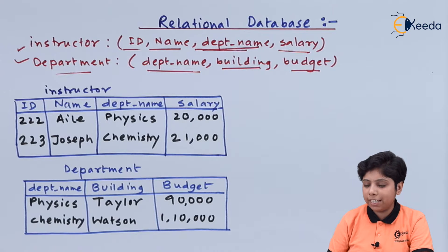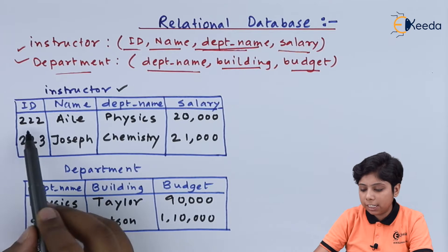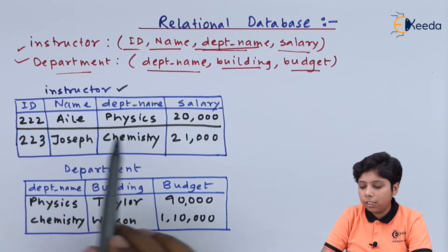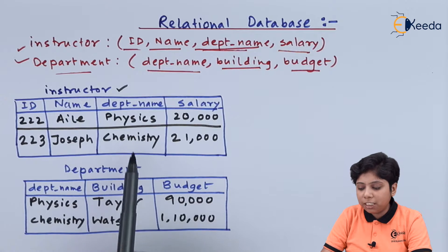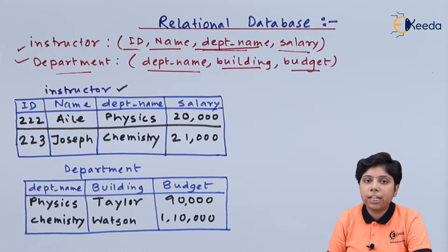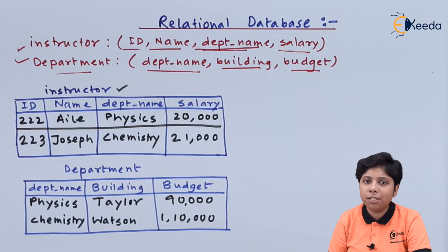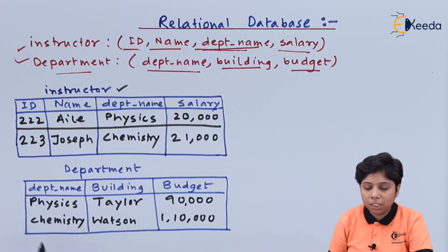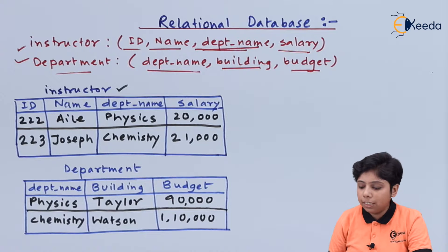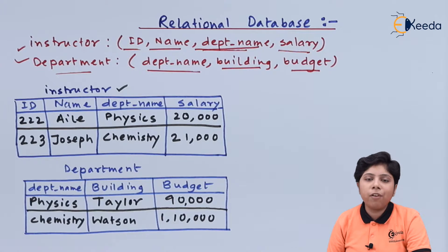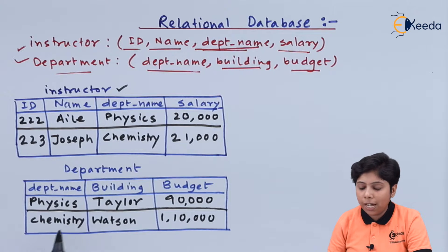At the logical level of abstraction, we can see the instructor table containing actual values — for example, ID 222, a name, department name 'Physics', and salary $20,000. The department name column can contain 'Physics' and 'Chemistry' multiple times in the instructor table, since multiple instructors can belong to the same department. However, in the department table, there should be only one 'Physics' and one 'Chemistry' entry, as each represents a unique department with its building and budget. This shows the clear distinction between the primary key in the department table and the foreign key referenced as referential integrity in the instructor table.